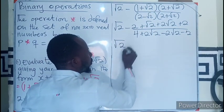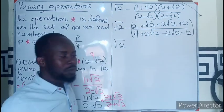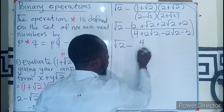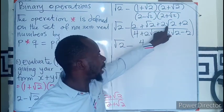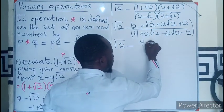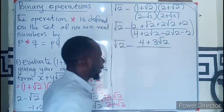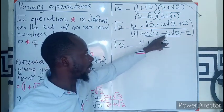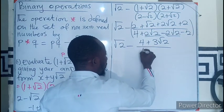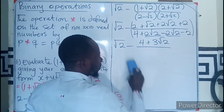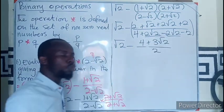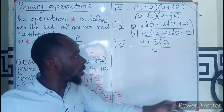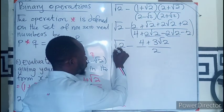Now we have our terms. In the numerator, combining the rational parts: two plus two gives four. For the root two terms: one plus two gives three root two. So the numerator is four plus three root two. In the denominator, the irrational terms cancel: two root two minus two root two is zero, leaving four minus two equals two. So the fraction simplifies to four plus three root two over two.